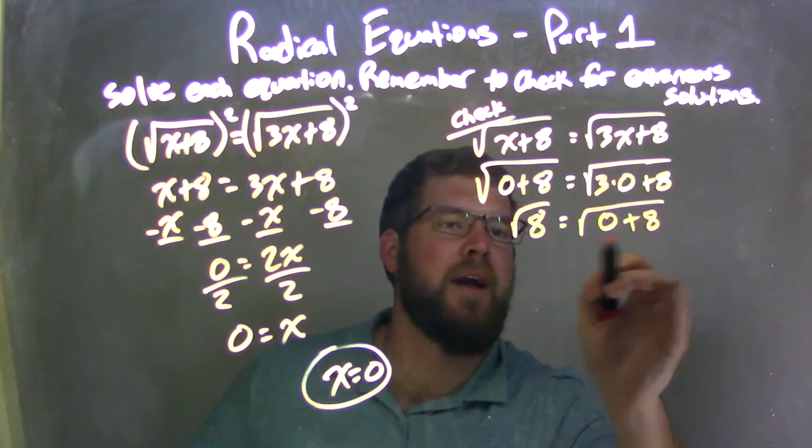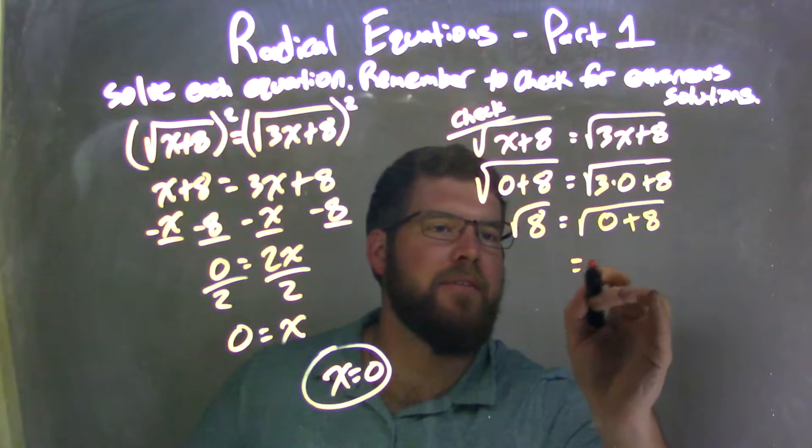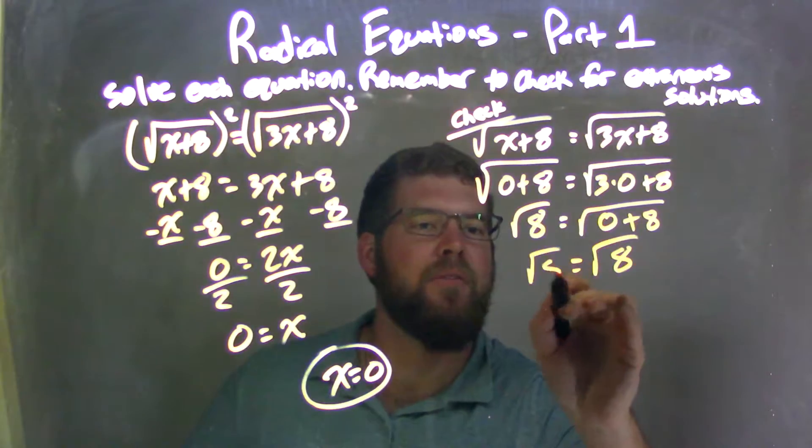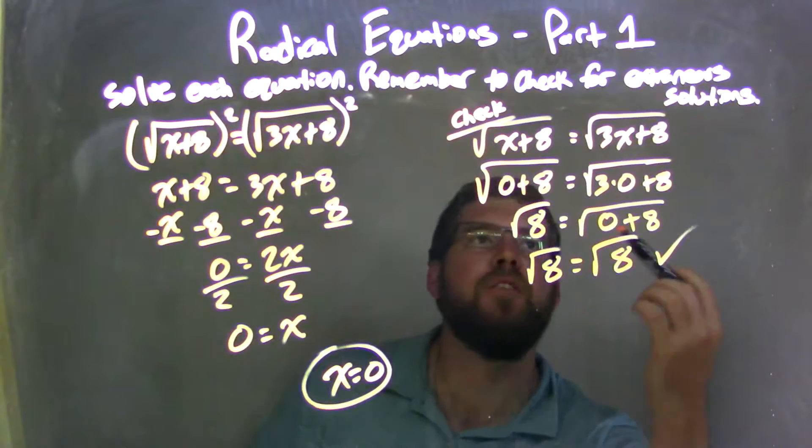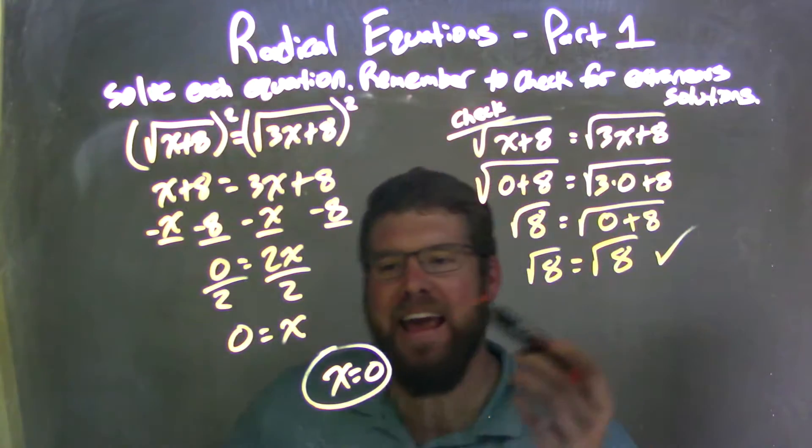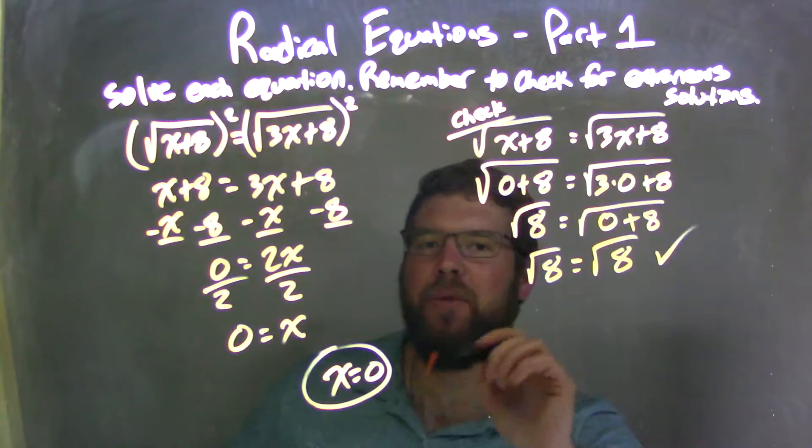So 3 times 0 is 0, add an 8, 0 plus 8, we already knew it was 8, so the square root of 8 equals the square root of 8. Left and right are equal, fantastic, showing me that we have no extraneous solutions, and that x equals 0 is my final answer.